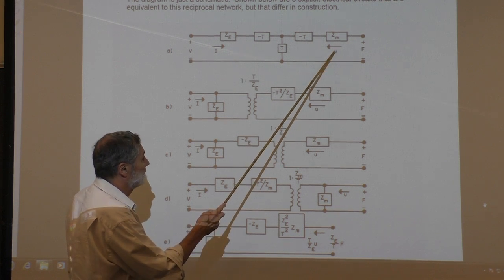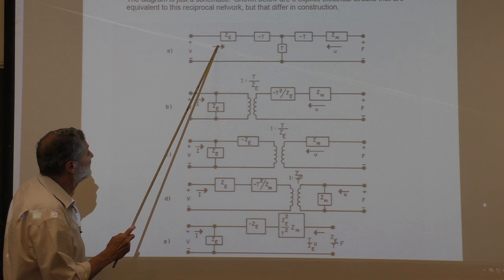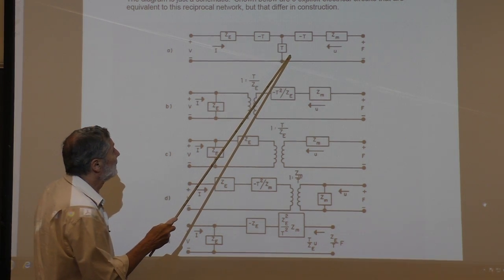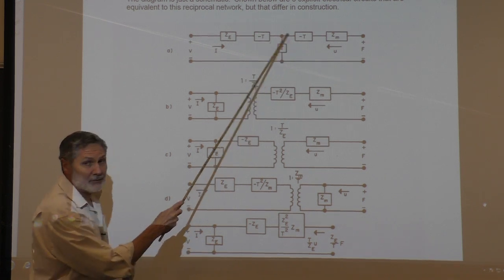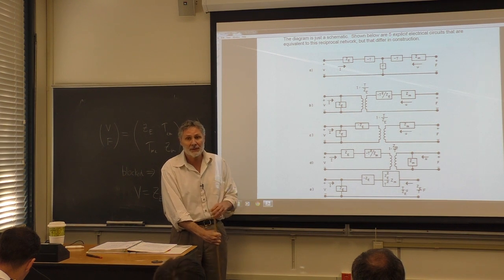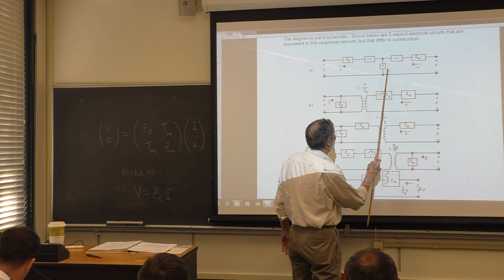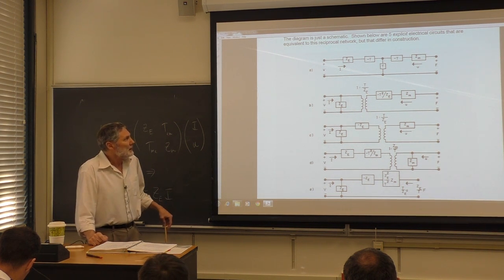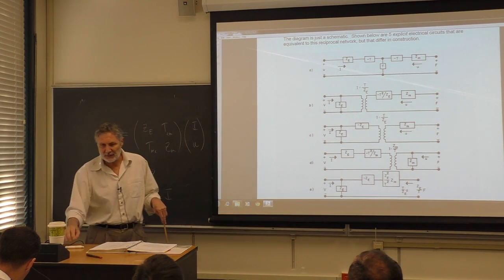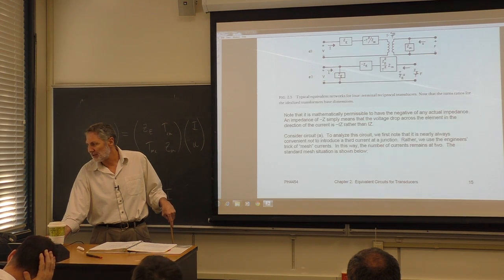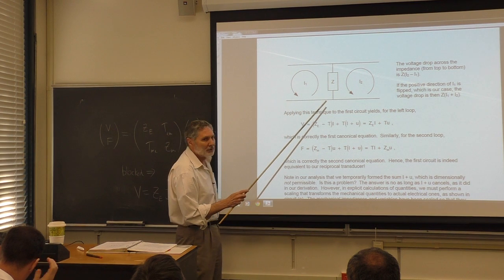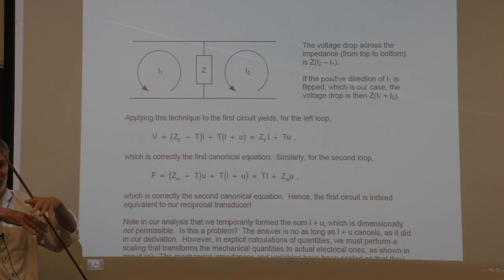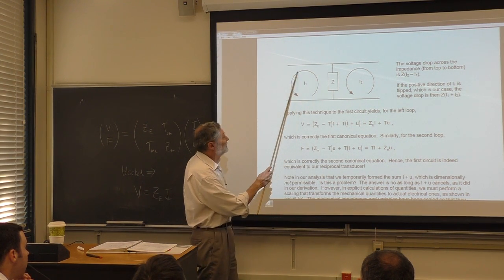Mesh currents: assign loop currents I₁ and I₂ in counterclockwise directions. The voltage drop across a shared impedance is that impedance times the difference of the two mesh currents: (I₂ − I₁) for standard orientation, or (I + u) given our sign convention. This avoids introducing extra unknowns.